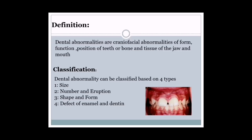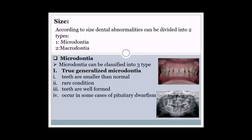Classification: dental abnormalities can be classified based on four types — number one: size; number two: number and eruption; number three: shape and form; number four: defect of enamel and dentine. Today we are discussing about size only.